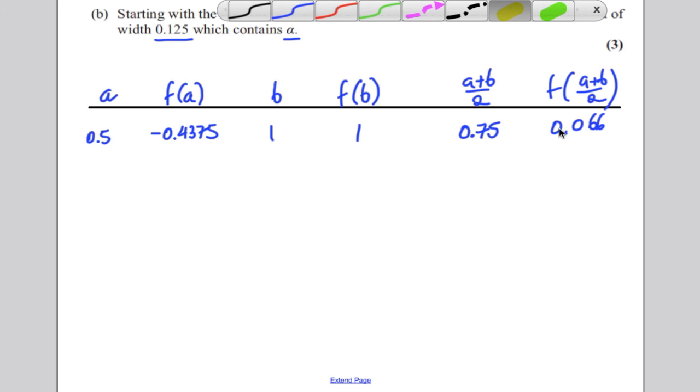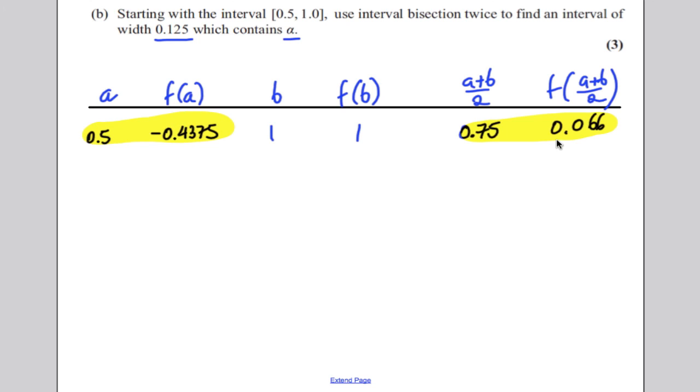Now you always keep this one. This is positive, so these two give you a positive answer. If you want to find a root between two values, you're looking for the number you put in for x to give you a negative. So you're looking for this one here, because there's a change of sign between 0.5 and 0.75, you know there's a root between them.